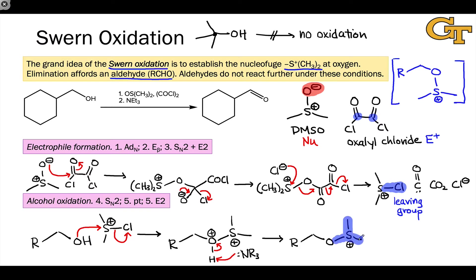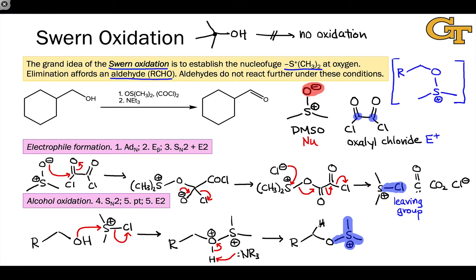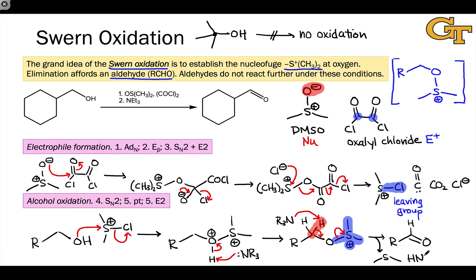The dimethylS⁺ group is a good leaving group. At the alcohol carbon, the hydrogens are acidified by the presence of this leaving group linked to oxygen. Deprotonation of one of these hydrogens by the added amine base — triethylamine — kicks off an E2 elimination. As we've seen, elimination is the essence of oxidation. This generates the aldehyde product along with byproducts: dimethyl sulfide, the conjugate base of the leaving group, and the conjugate acid of the amine base, HNR3⁺.